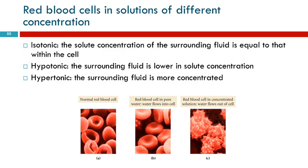There's a word for that — it's called crenation. That's what's happening when the red blood cells shrivel up because the concentration of dissolved solids in the solution they're in is too high, and it draws water out of them.